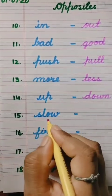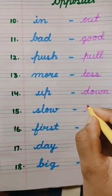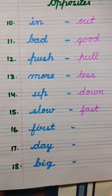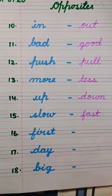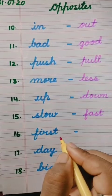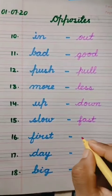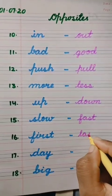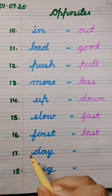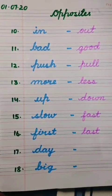Number fourteen: up — opposite of up is down — D-O-W-N, down. Number fifteen: slow — S-L-O-W — and opposite of slow is fast — F-A-S-T, fast. Number sixteen: first — F-I-R-S-T — and opposite of first is last — L-A-S-T, last.